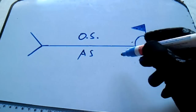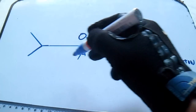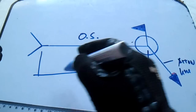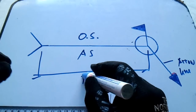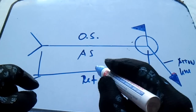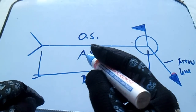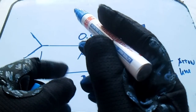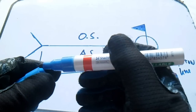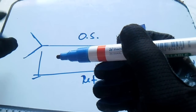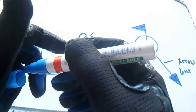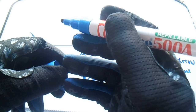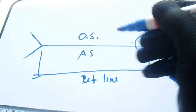We have a reference line, and we also have a tail. In the tail, you will see the specification from the drawing — such as the process and other references.